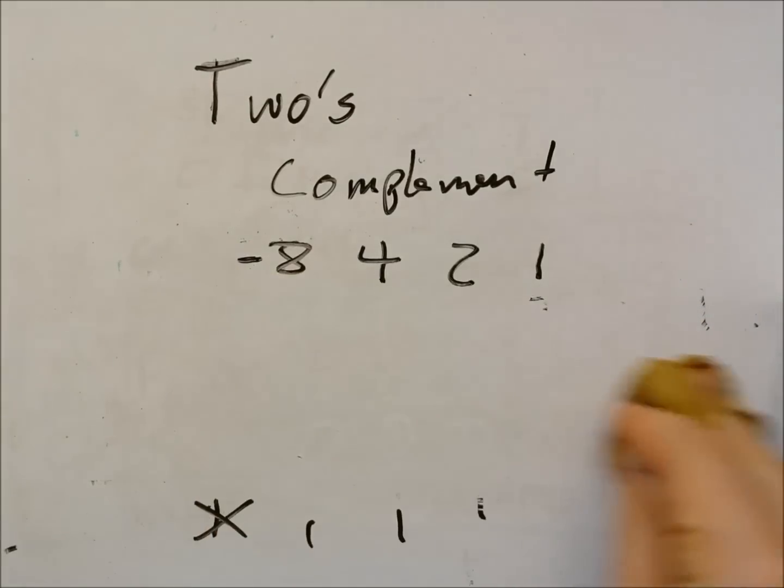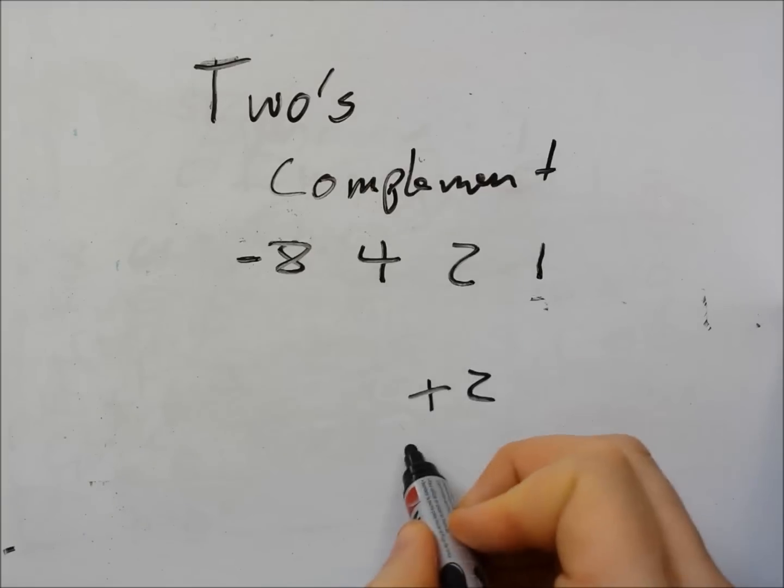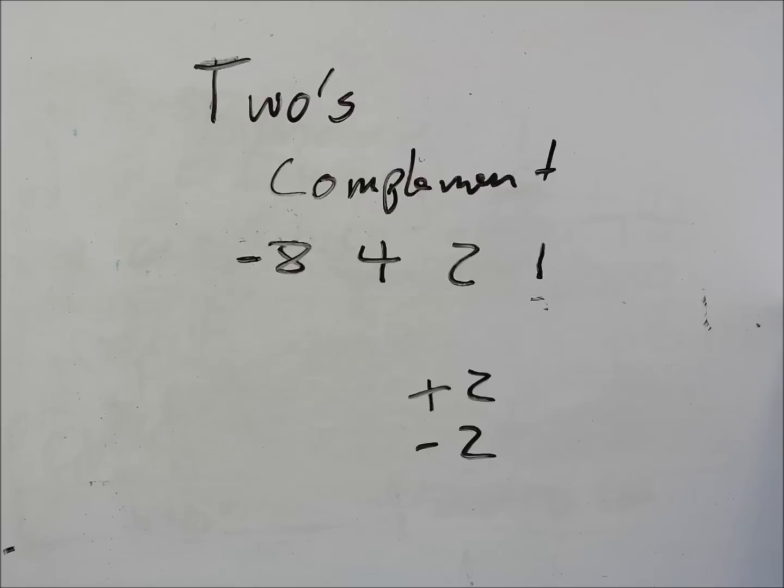The main thing people find difficult about two's complement is seeing how the positive number and the negative number relate to each other. So in normal maths if we say plus two and minus two this seems really obvious that one's positive one's negative.